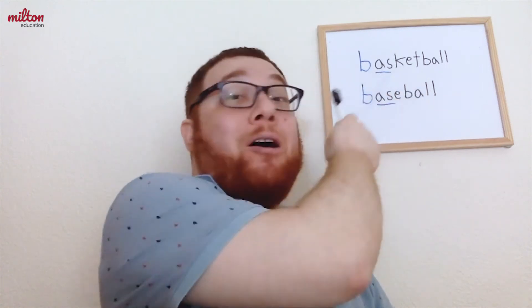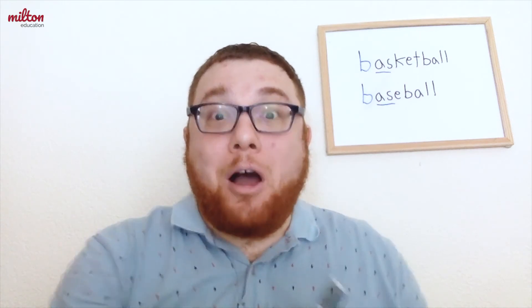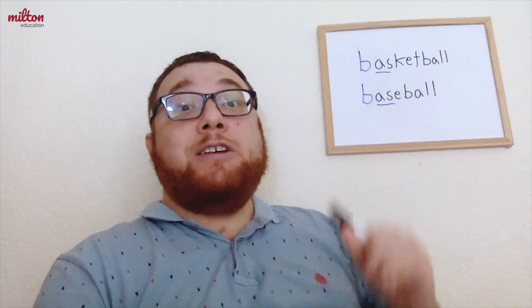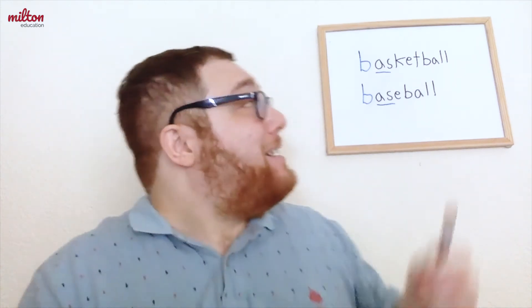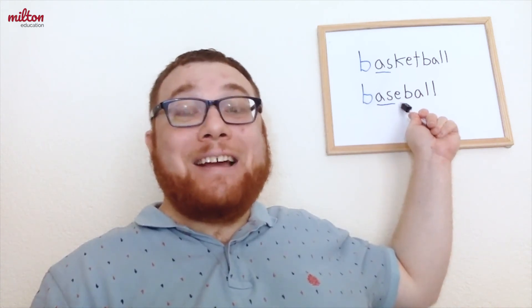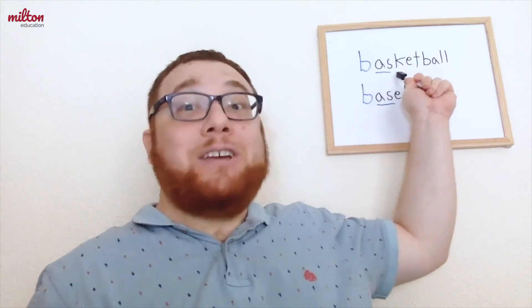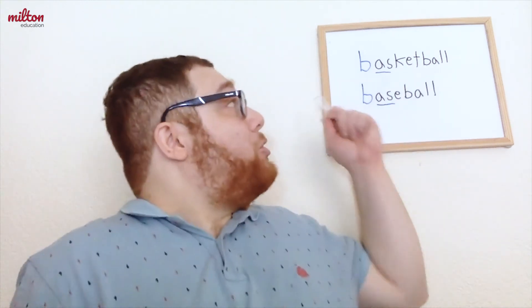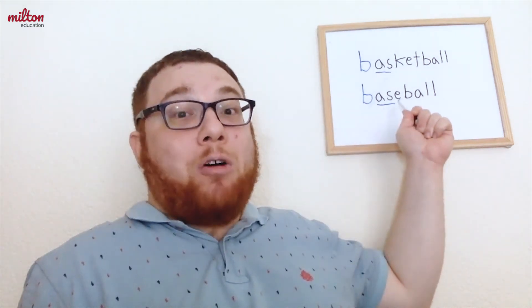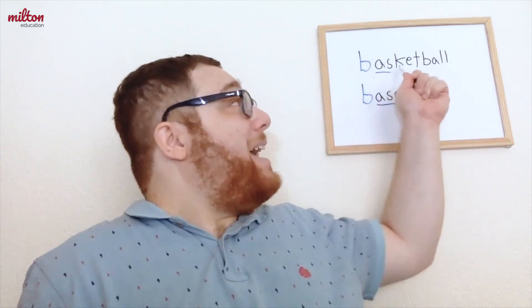Now this is when putting words in alphabetical order gets really fun. You might notice that in words like basketball and baseball, the first three letters are exactly the same. What do you do? Because the first three letters are the same, we have to look at the fourth letter instead. The fourth letter in baseball is E, and the fourth letter in basketball is K. The word that comes first is baseball because E is before K in the alphabet.